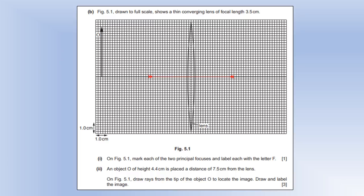We've placed an object O as we can see. And what we need to do is draw rays from the tip of the object to locate the image. So there are a couple of rules we can use to help us locate the image. The first one we can use is a lens will always focus parallel rays of light through the principal focus. So anything that goes in at that direction that we see here is going to go through the principal focus.